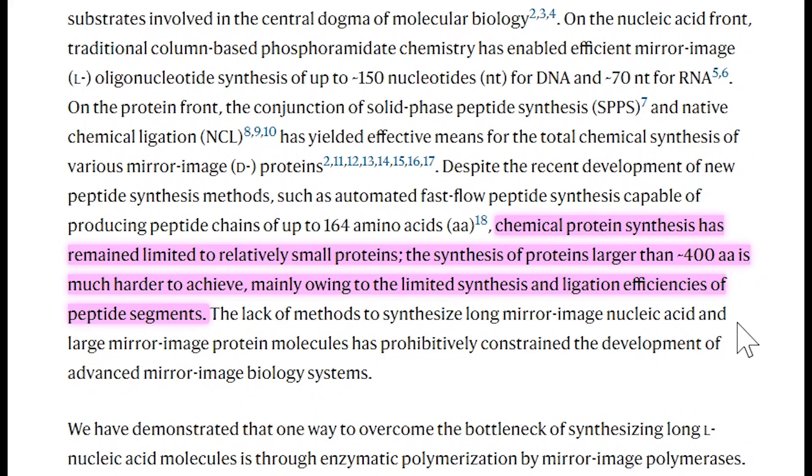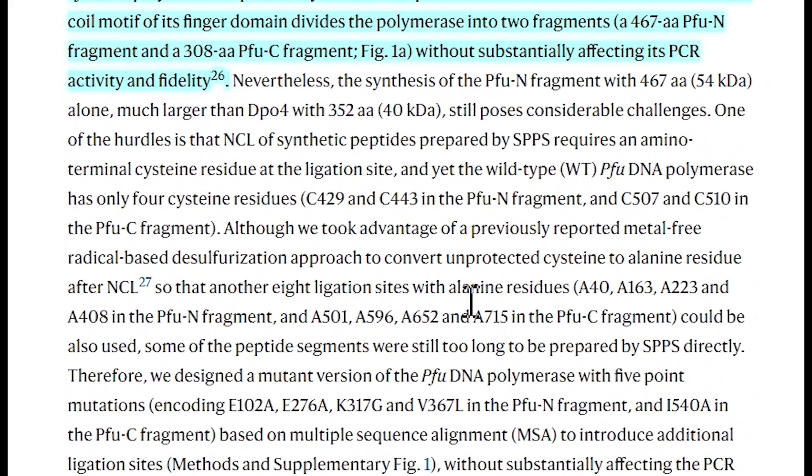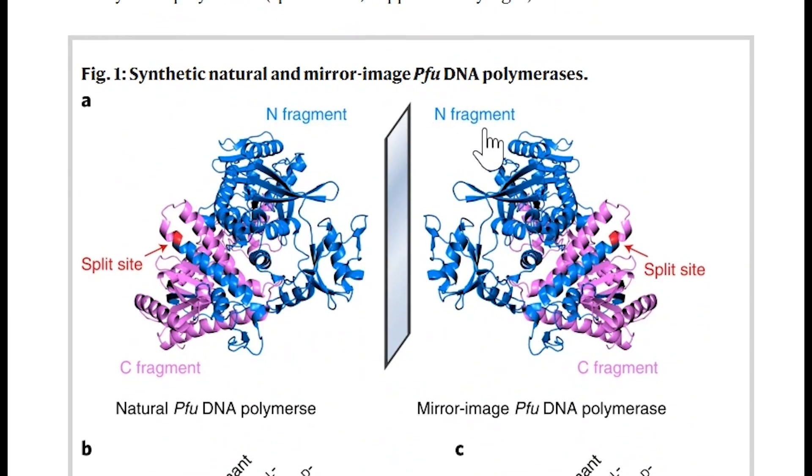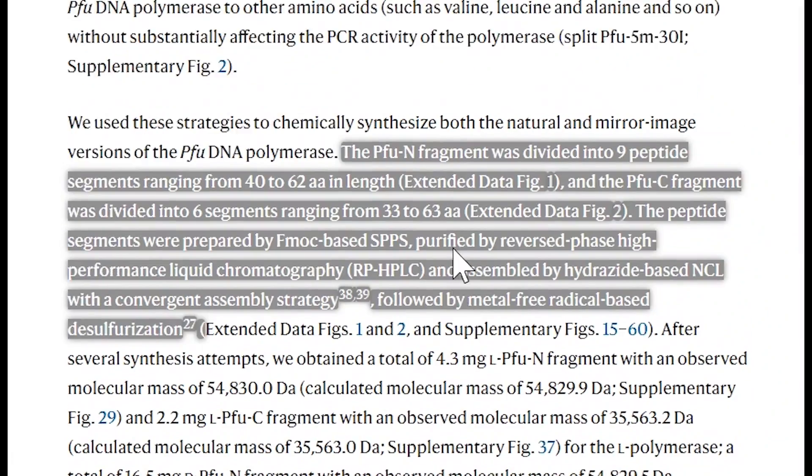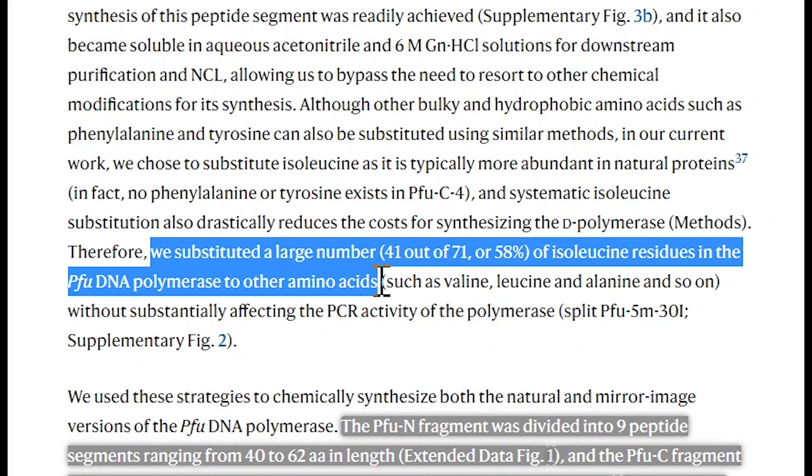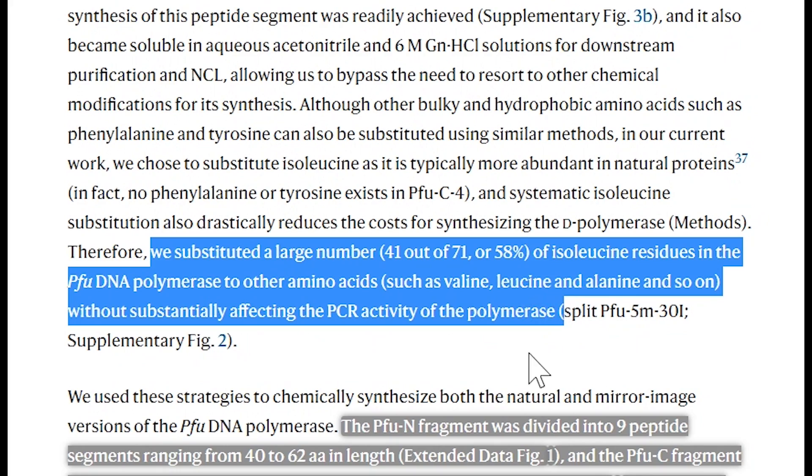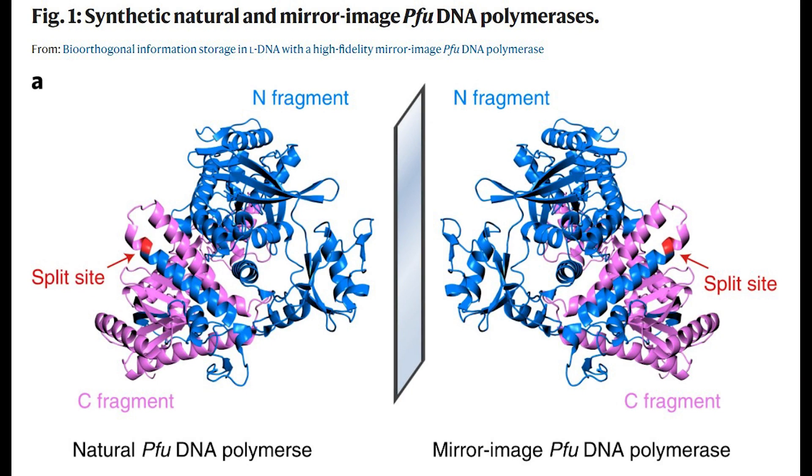So to overcome these problems, the authors had to be quite clever. And so what they did is firstly, they split up the protein into two fragments in a way that they know won't really affect its enzymatic activity. And in addition to aid with the chemical synthesis, they made some substitutions. So swapping some amino acids for other amino acids, that helped to aid in the purification of the protein during the chemical synthesis. And so bottom line, they were able to create this 90 kilodalton high fidelity mirror image DNA polymerase.